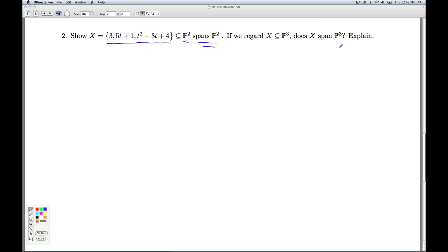And I want to show that it actually spans P2. And then we're given a follow-up question, does it span P3? Okay, so how do I show something spans a vector space? I have to show that every vector in here is a linear combination of vectors in there.